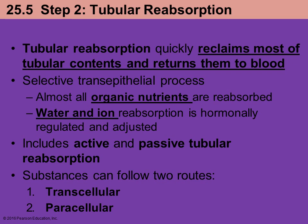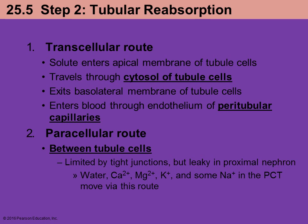How do things pass out of the tubules into the capillaries? They can go one of two routes: either transcellular or paracellular. The transcellular route means it's going to pass through the cells lining the tubule — the cells between the tubule and the capillaries. They're going to travel actually inside the cell, so they have to go out of the tube, inside the tubule cells, through the cytosol, exit out on the other side at the basolateral membrane, and then enter the blood.